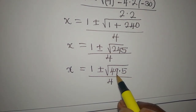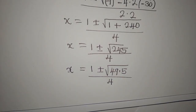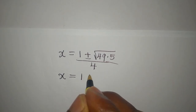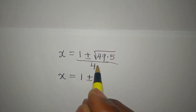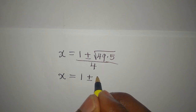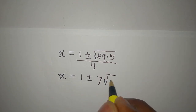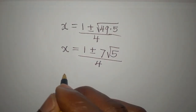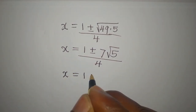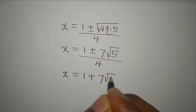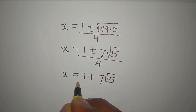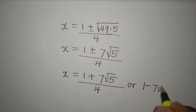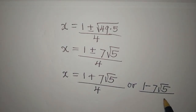I brought 49 out because it is a perfect square. So x is equal to 1 plus or minus: square root of 49 is 7, then we have square root of 5, all over 4. So x equals 1 plus 7 root 5 over 4, or 1 minus 7 root 5 over 4.